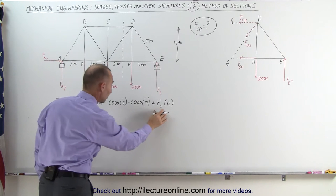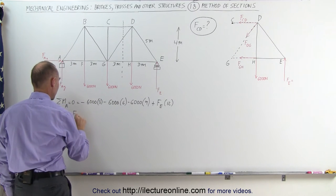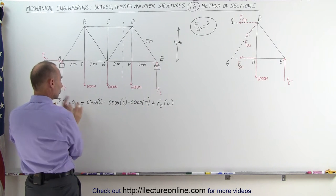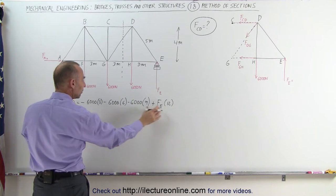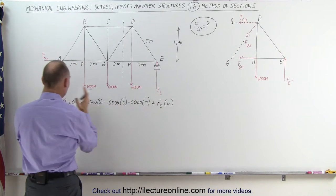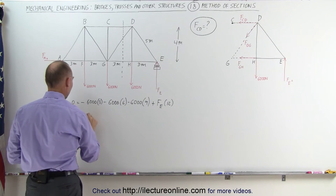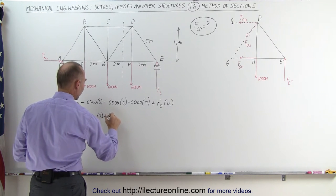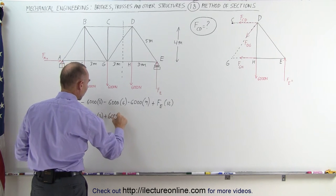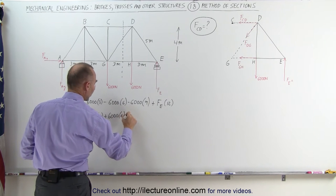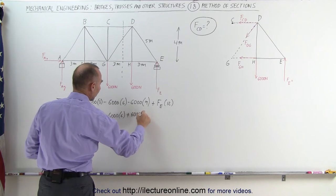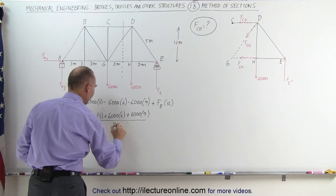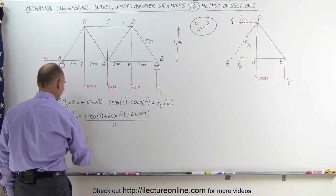Therefore we can solve for F sub E. F sub E therefore is equal to, when we move this over to the other side and we turn the equation around these all will become positive. This will stay positive when we move this to the other side of the equal sign. We get a positive 6,000 times 3 plus a positive 6,000 times 6 plus a positive 6,000 times 9, and the whole thing divided by the coefficient in front of F sub E which is 12.